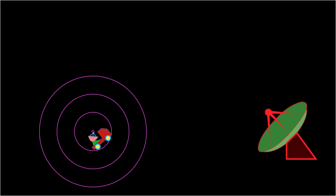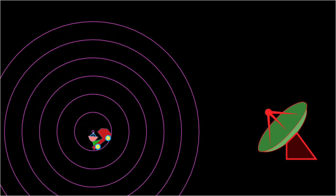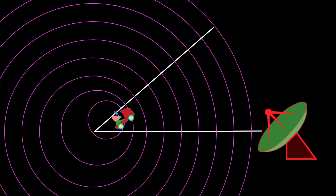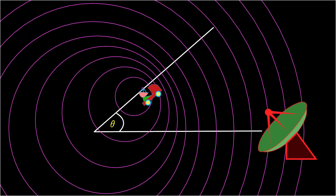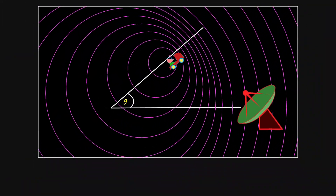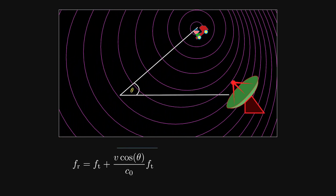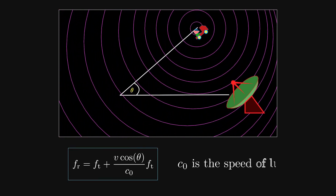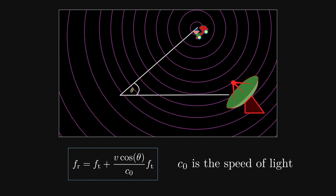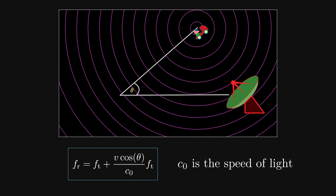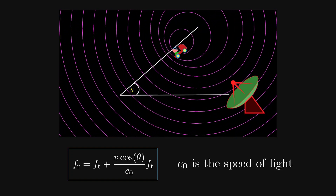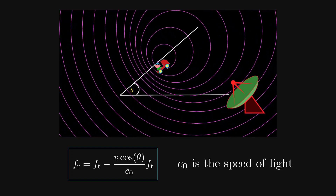Consider a transmitter transmitting a wave with frequency f, and moving with some velocity v at an angle theta relative to the direction from the transmitter to the receiver. If the total movement is toward the receiver, the receiver will observe a frequency equal to the transmitted frequency plus another component that depends on the velocity and the transmitted frequency itself. The higher the velocity and transmitted frequency, the higher the observed frequency. If the movement is away from the receiver, the observed frequency will be reduced by the same factor.